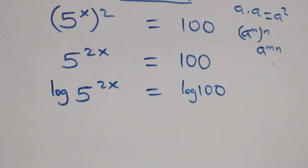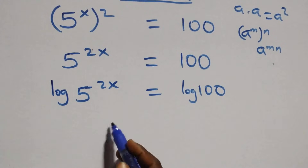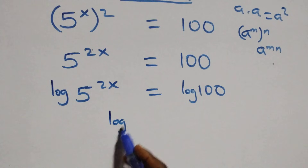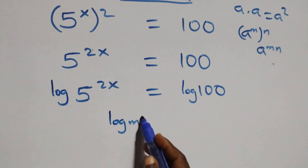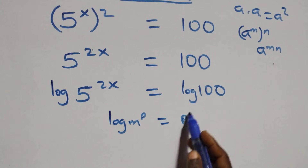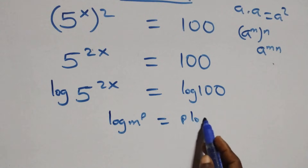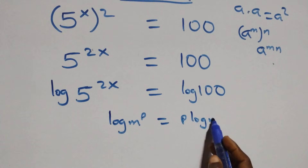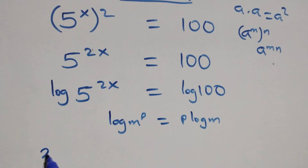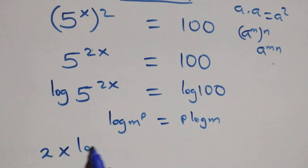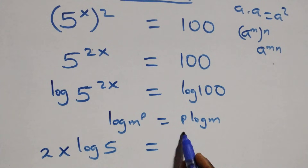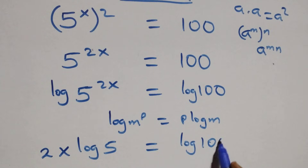Here we apply the power rule of logarithms: log of n raised to power p is the same thing as p times log n. So we have 2x times log 5, equals to log 100.